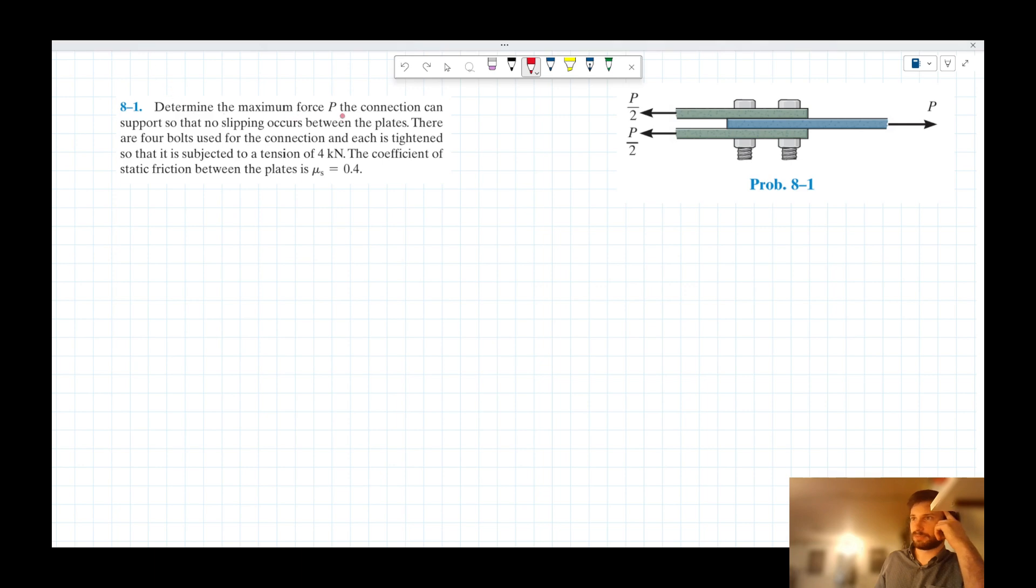determine the maximum force P the connection can support so that no slipping occurs between the plates. There are four bolts used for the connection and each is tightened so that it is subjected to a tension of four kilonewtons. The coefficient of static friction between the plates is 0.4.